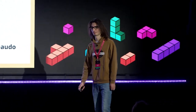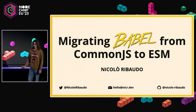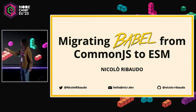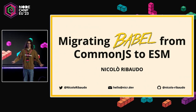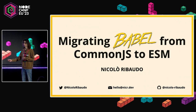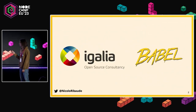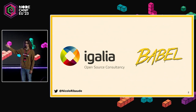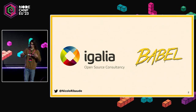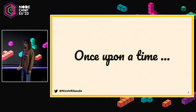Hello everybody. With so many talks about new shiny features, this is more a story about something that happened over the past three years — a migration from CommonJS to ESM. ESM is eight years old now and still the Node ecosystem is struggling with this. Let's see what we did for migrating our own code. I maintain Babel; I am one of the three core team members and I work at Igalia.